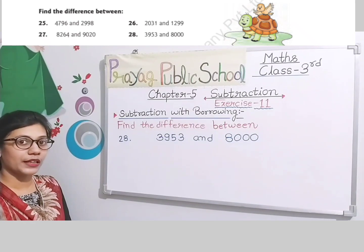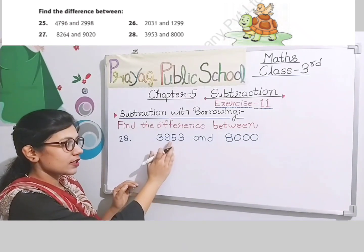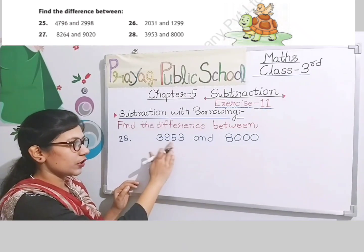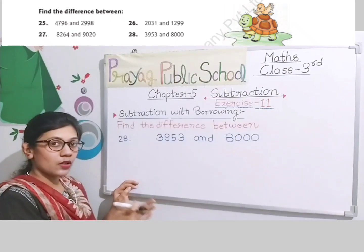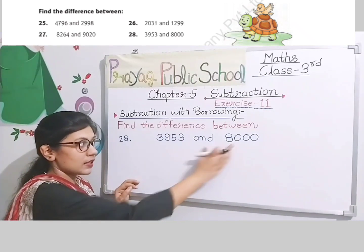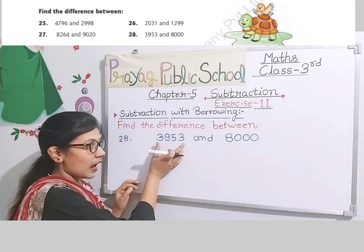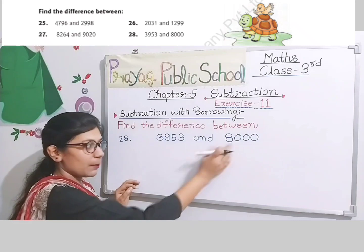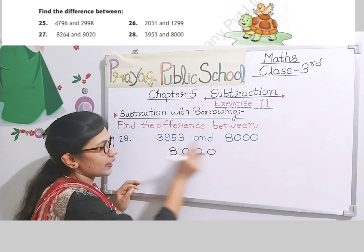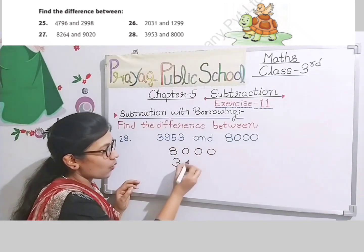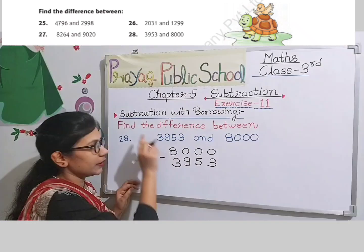The question number twenty-eight: first number is three thousand nine hundred fifty-three and eight thousand. Ab pata chal gaya kaun sa number bada hai — eight thousand. We arrange the bigger number first in the column: eight thousand. Jo number chota hai — three thousand nine hundred fifty-three — usse niche arrange karenge. Subtraction ka sign zaroor lagayenge.